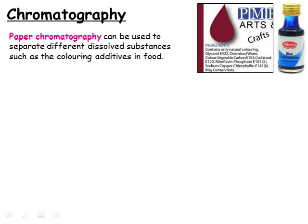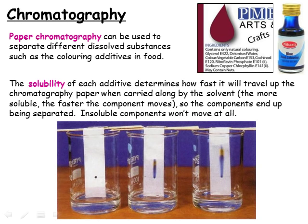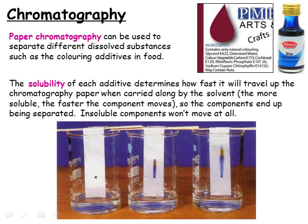Paper chromatography is a technique which allows different substances such as colouring additives in foods, paints, inks or cosmetics to be separated for analysis. It works on the basis that the more soluble a substance is, the faster it will be carried along by the solvent when the solvent soaks its way up a piece of chromatography paper. In this way, the most soluble additives move furthest from their starting point, and the least soluble ones move the least distance.